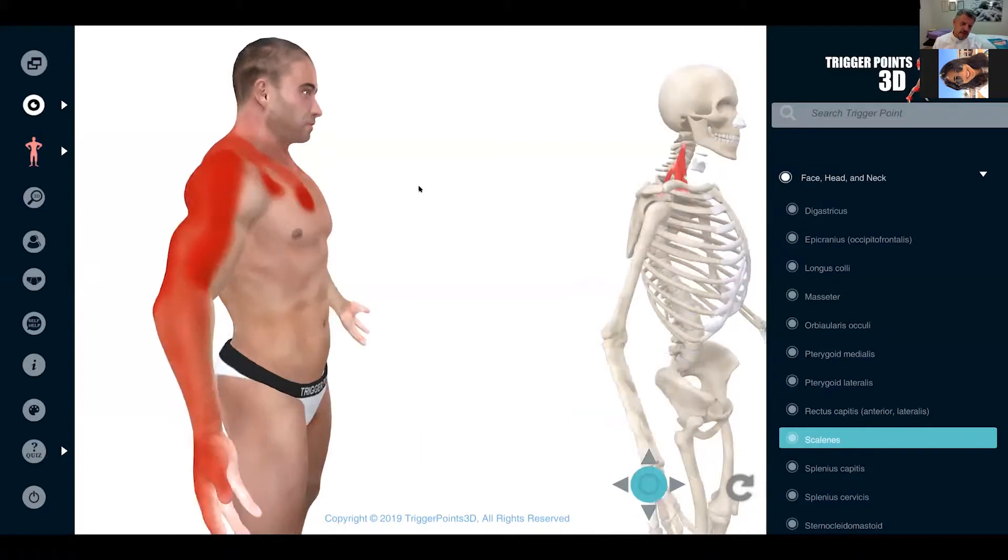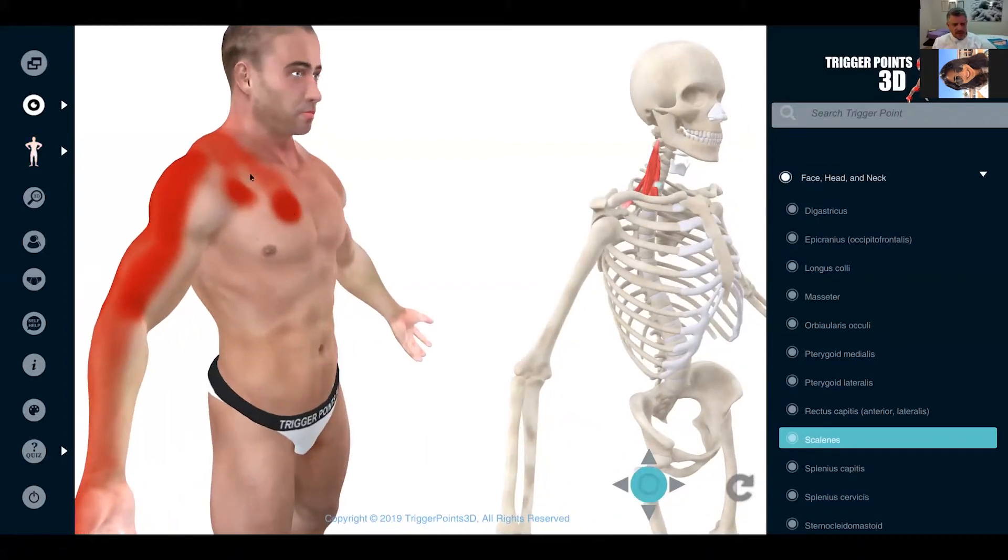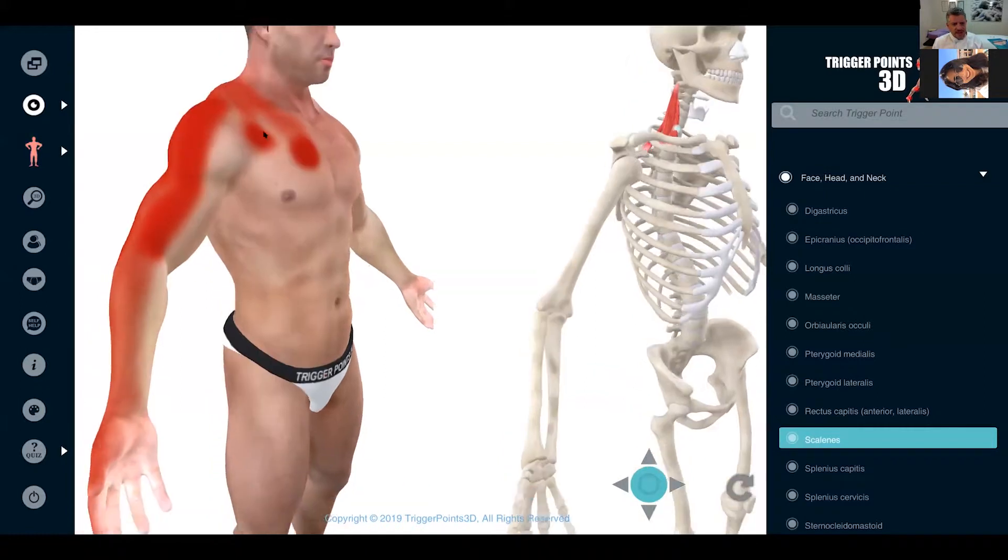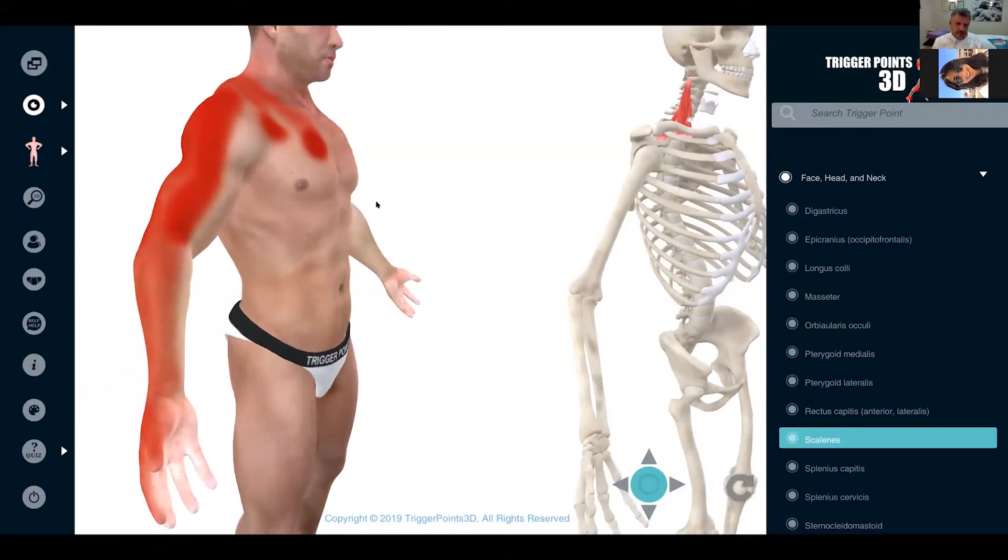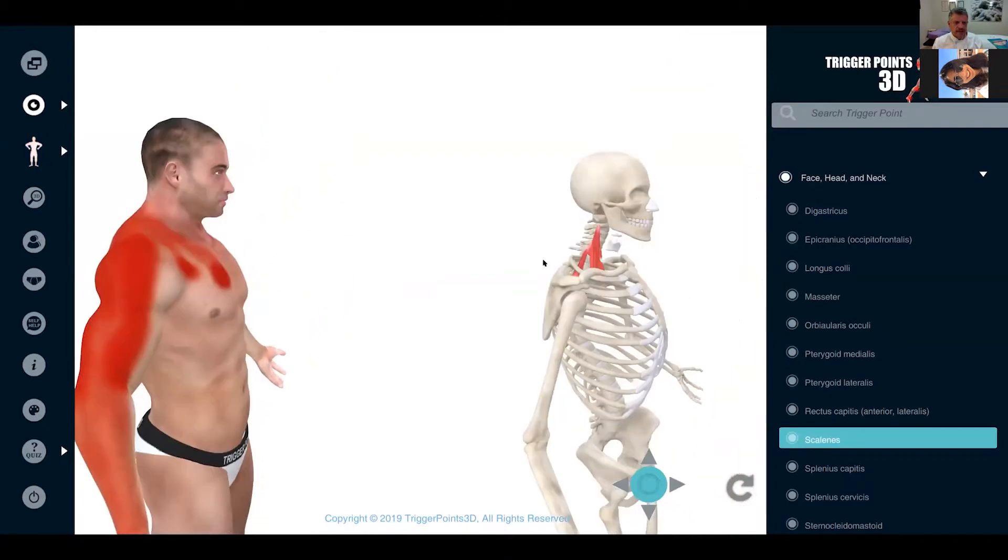In terms of these pain maps, the dense red is where most people feel the pain, while the lighter areas show where fewer people feel it.